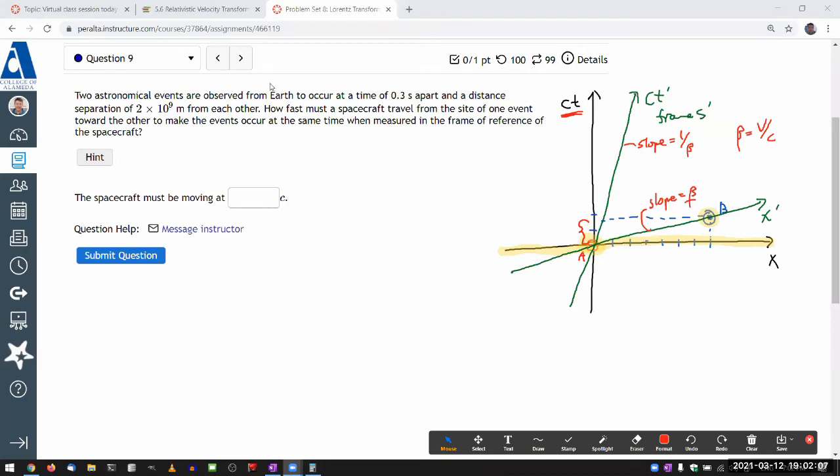And what the question is asking is how fast must a spacecraft travel from the side of one event towards the other? So from, say, Earth to directly towards the second event in terms of its space coordinate in order to make the event occur at the same time simultaneously when measured in the frame of reference of the spacecraft. So that's my moving reference frame. That's my frame S prime. It must be moving at this speed beta that will allow this slope of the space-time axis to be tilted in just the right way so that the X prime axis will connect both of these points. The point on Earth and point farther away at 2 billion meters away. Then in this new reference frame, with this new space-time axis, both of these points have the time coordinate, T prime equal to 0, because they are both on the X prime axis.